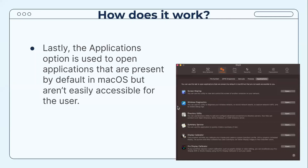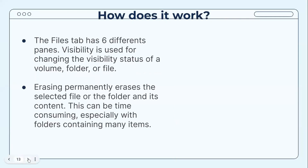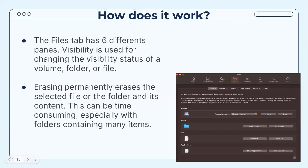The Utilities section also includes Wireless Diagnostics, Directory Utility, and Summary Service. The Files tab has six different panes. Visibility is used for changing the visibility status of a volume, folder, or file — you can choose to show or hide certain folders, files, and applications. The Erasing pane permanently erases the selected file or folder and its contents, which can be time-consuming especially with folders containing many items.